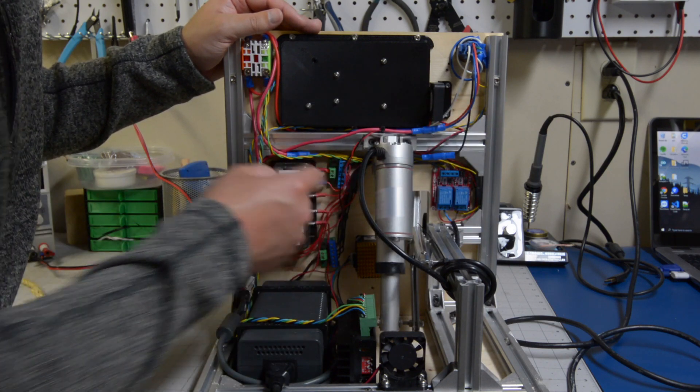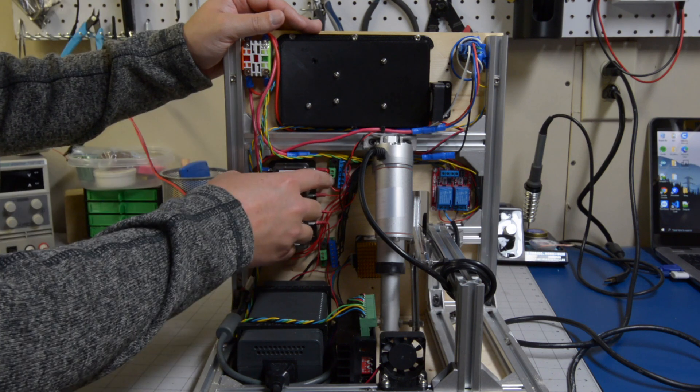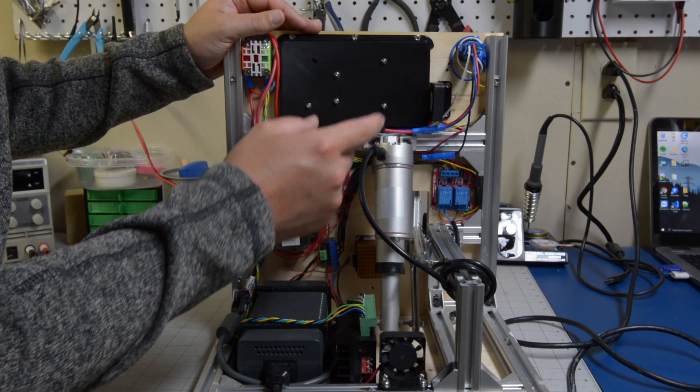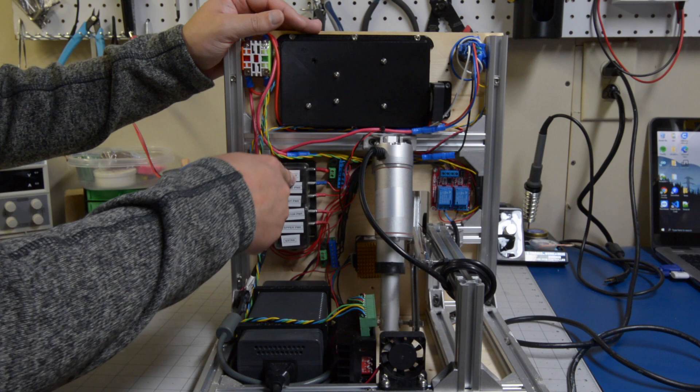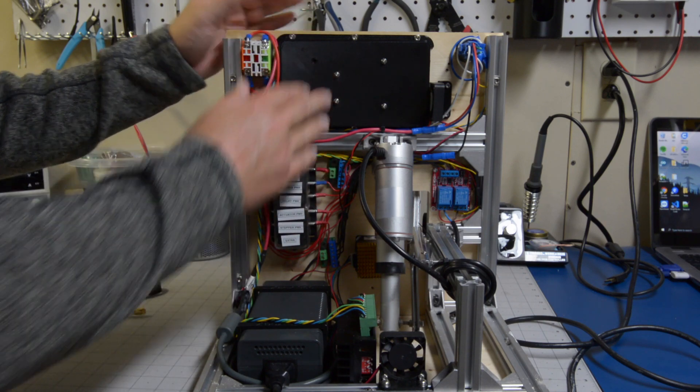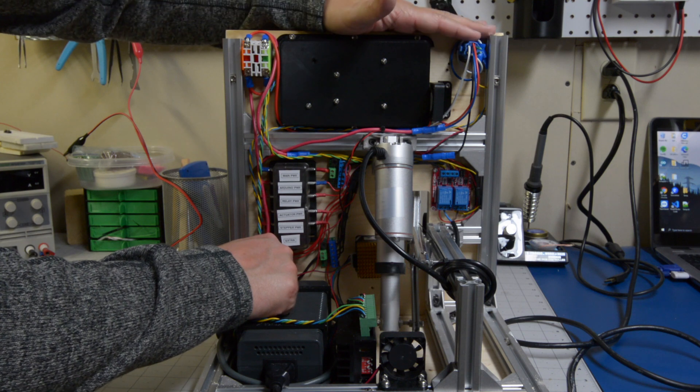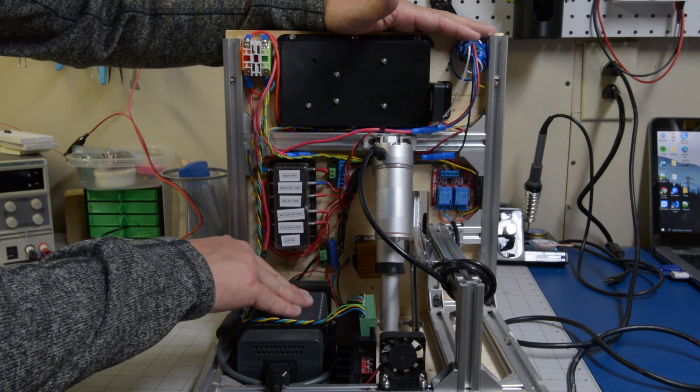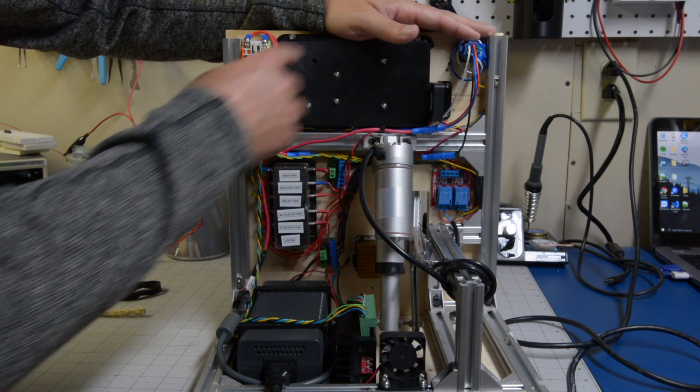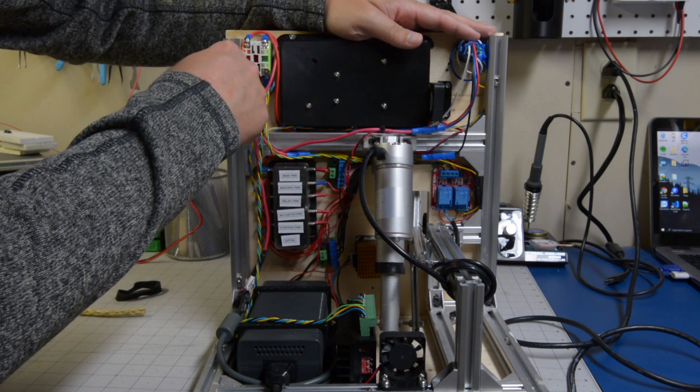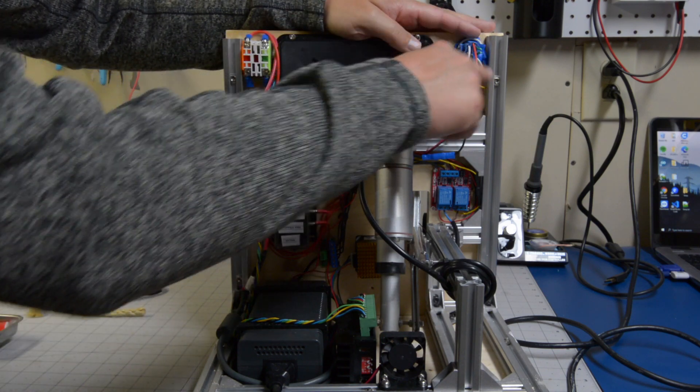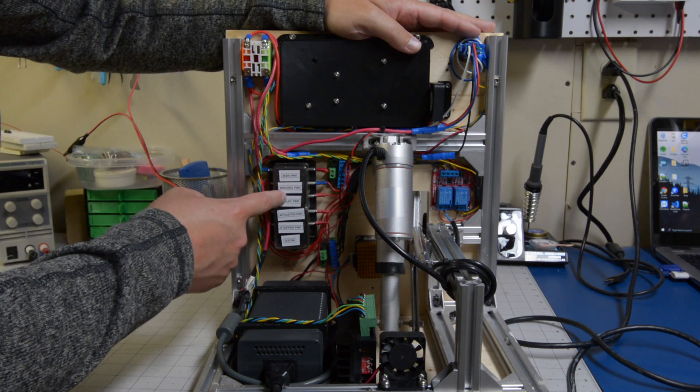Right here you can see a couple diodes I placed in here. This is to stop any voltage from coming backwards and coming back into the Arduino when the emergency kill switch is hit. Here is our double pole double throw as I mentioned before - it's required for this power supply. After the voltage is fed through our kill switch and our power switch it will come into our fuse box here.